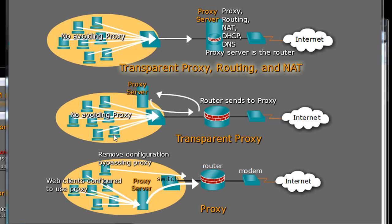Another scenario is to create a transparent proxy server. The clients directly request web pages from the router, but unbeknownst to them, the router sends those requests to the proxy, who then sends the request to the Internet. So there's no avoiding the proxy server — it's a more foolproof way of forcing your users to use it. The downside is you need a router that can redirect traffic to your proxy server on port 3128 or whatever port Squid is functioning on, so you need a fairly robust router.